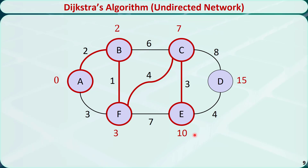Now let's check the neighbors of the visited nodes. Node E has just one direct neighbor: node D. The distance to node D is 10 plus 4 equals 14, which is smaller than the old value of 15, so we replace it with 14. Now node D is the only unvisited node, so we move from E to D.